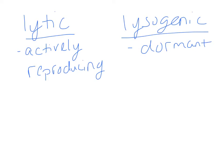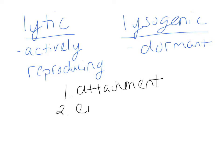There are five basic steps to these cycles of reproduction. The first is attachment, which is required for both cycles - the virus has to attach to the host cell. The second is entry, which is also required for both - the genetic material has to get into the host cell.